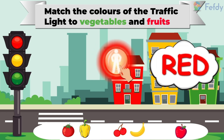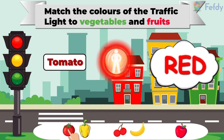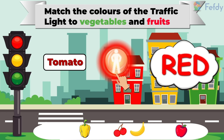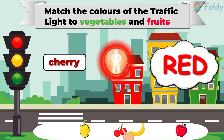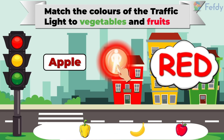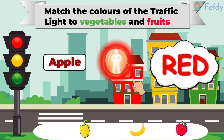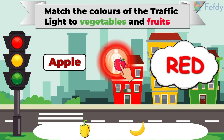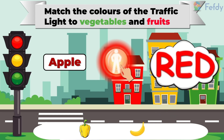Red. What fruits and vegetables are red in color? Tomato — tomato is red. Cherries are red in color. Is an apple red in color? Yes, red apple.